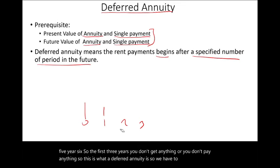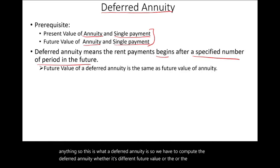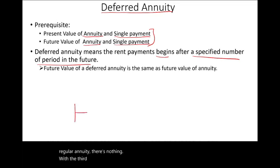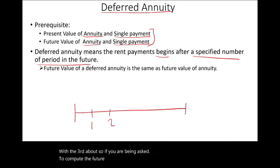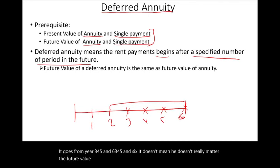We have to compute the deferred annuity, whether it's the future value or the present value. The good thing about the future value is it's the same as the future value of a regular annuity — there's nothing deferred about it. So if you are asked to compute the future value of an annuity starting in year 3 going through years 4, 5, and 6, it doesn't really matter. The future value is the same computation; you don't have to make any adjustment.